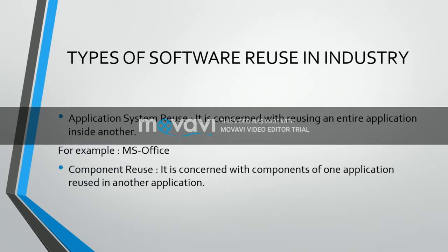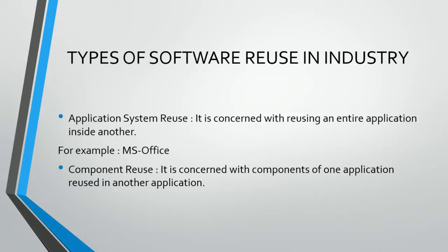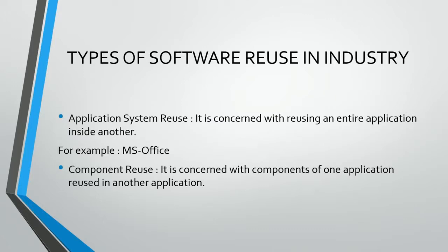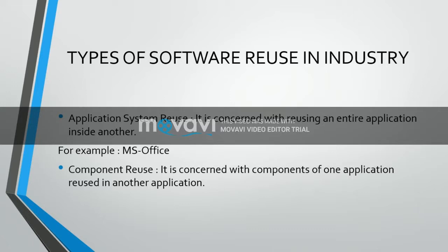Types of software reuse: there are two types. First is application system reuse, which is concerned with reusing an entire application inside another — like modifying or upgrading an existing system. We totally use the existing software, do the upgradation, and then release it to the client, reusing the entire component. Second is compound reuse, which is concerned with components of one application being reused in another application.